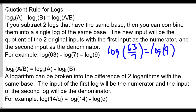When two logs subtract each other, we divide the insides — first input divided by second input. Conversely, log base b of (a/b) equals log base b of a minus log base b of b; a logarithm of a quotient can be broken into the difference of two logs. For example, log of (14/q) equals log 14 minus log q.